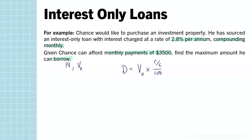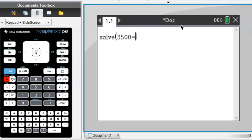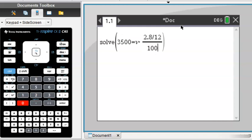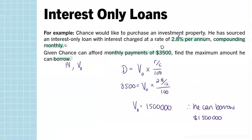We construct an equation with everything except the unknown. We have monthly payments of $3,500, interest rate of 2.8% per annum compounding monthly — so 12 times a year over 100. In the calculator, we solve for V: V times 2.8 over 12 over 100 equals 3,500. That tells us Chance can borrow $1,500,000.